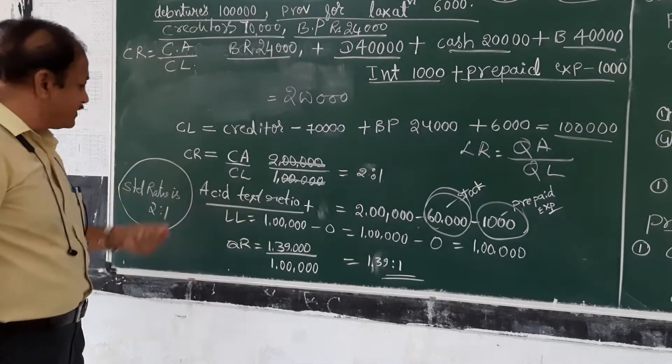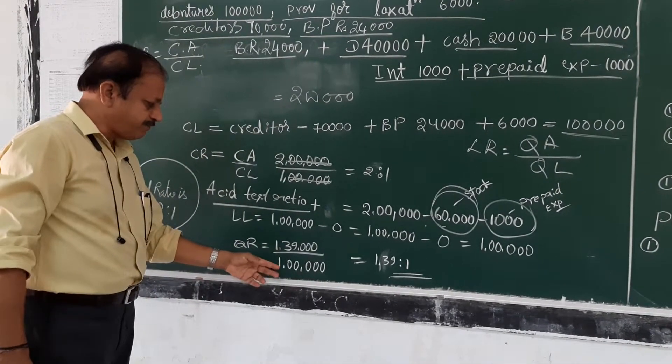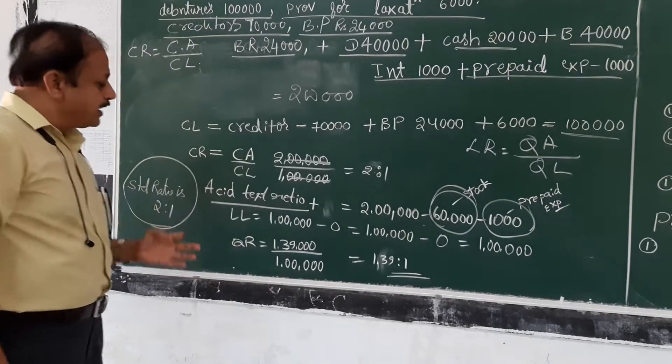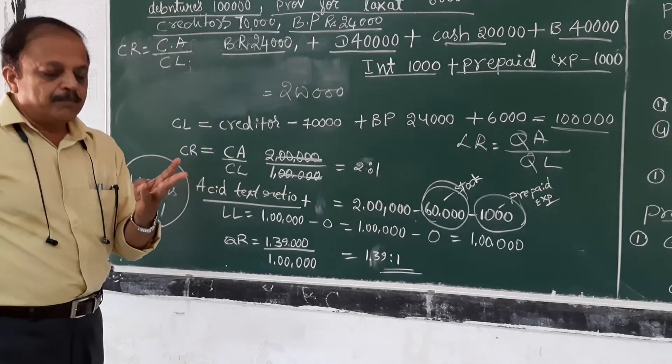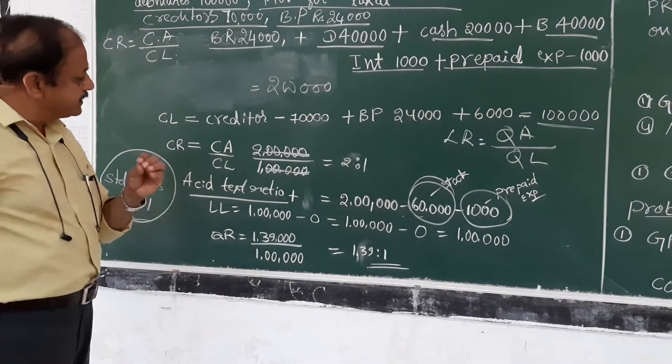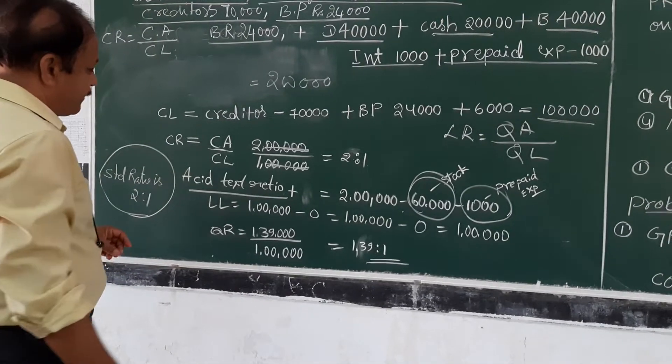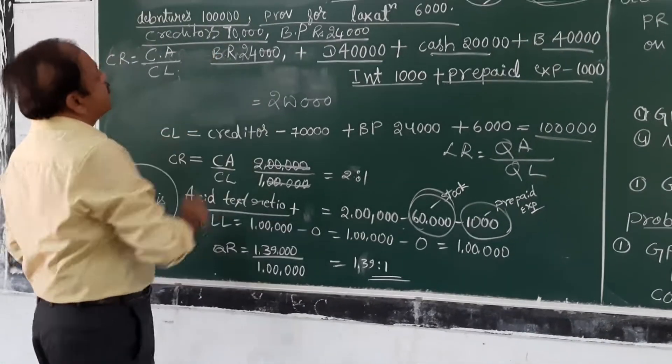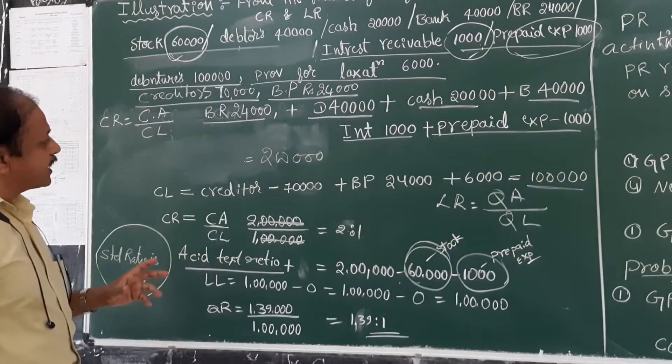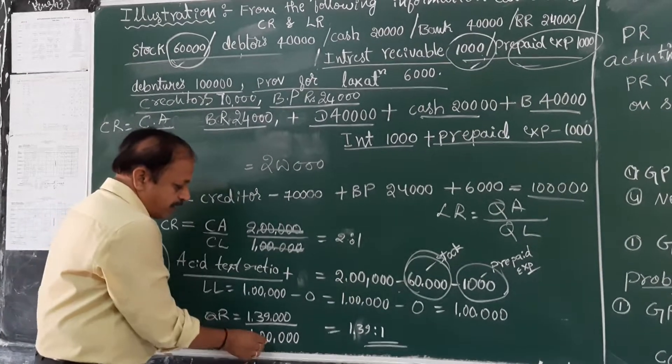Similarly, quick liabilities - liquid liabilities. Now two items, one is bank overdraft is excluded from this. Here in our problem, there is no bank overdraft. So then the quick liabilities comes to 1 lakh.